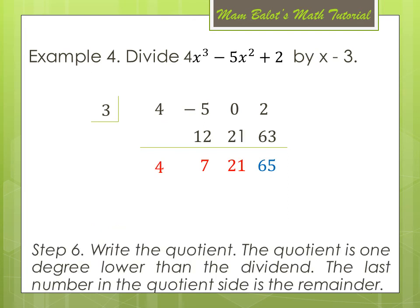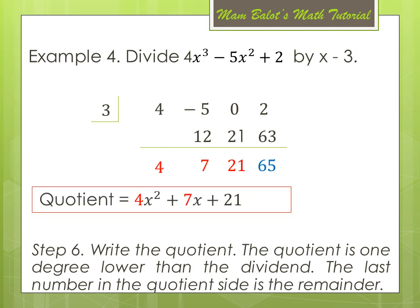Step 6: Write the quotient. The quotient is 1 degree lower than the dividend. The coefficients of our quotient are 4x squared plus 7x plus 21, since the degree of our dividend is 3, the degree of our quotient is 2. The last number is the remainder, which is 65.